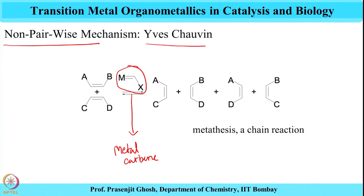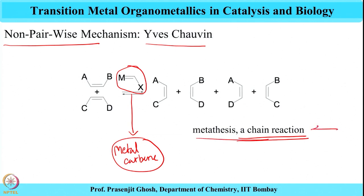Another important feature of Chauvin's mechanism is that it is a chain reaction, in the sense that several types of metal carbene species are generated and they carry out the metathesis reaction in a chain fashion. What this slide shows is that two olefins with different substituents A and B, C and D come together to give olefins A and C, B and D, as well as A and B, B and C. This is the famous cutting and stitching definition — as if somebody had cut the olefins into fragments and then stitched them up to give all combinations possible through this chain reaction.